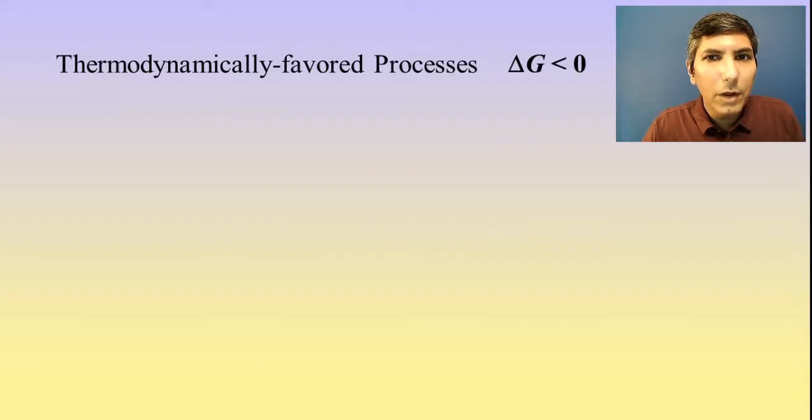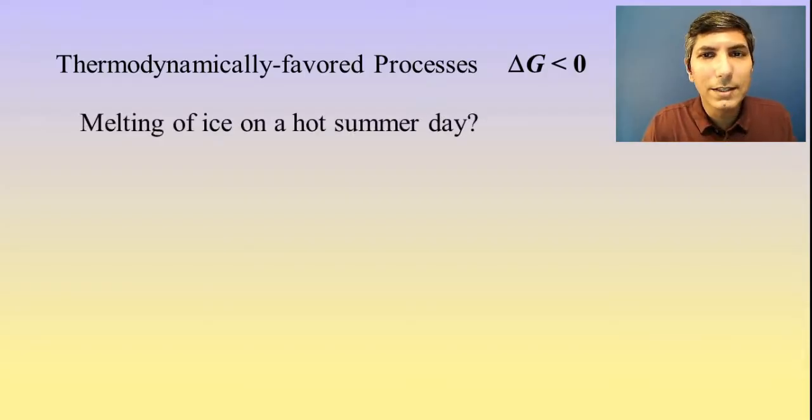We've talked about thermodynamically favored processes in the last couple of videos, and we said that if it's thermodynamically favored, that means it's a process that generally speaking is going to happen at a certain temperature. Now mathematically that means its delta G, its change in Gibbs free energy, is less than zero, so it's a negative number. So just as an example, there are some processes that you don't even need to have data for. You can probably figure out if it's a thermodynamically favored process or not.